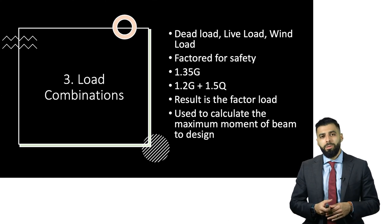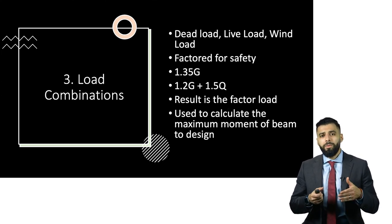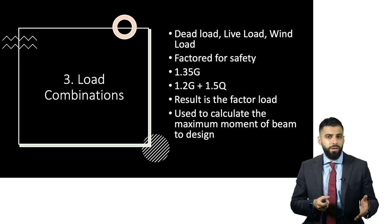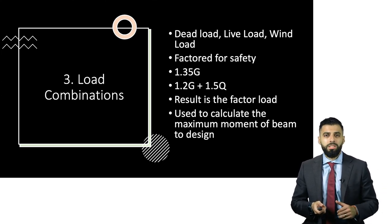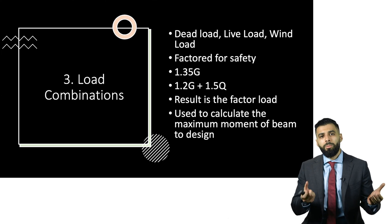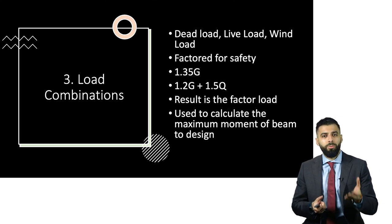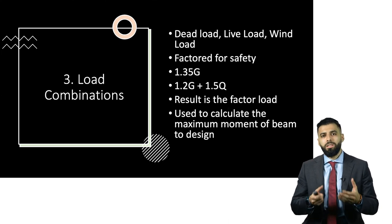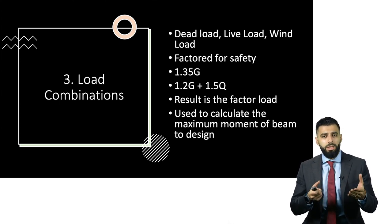The third step, once you have estimated the dimensions of your section, is to look at load combinations. This is where you consider dead loads, live loads, and any wind loads, which are then factored for safety. For example, one load combination multiplies the dead load G by 1.35. Another load combination uses 1.2G plus 1.5Q, where Q is the live load. This is the load combination a designer uses, and it can be used to calculate the maximum moment of the beam.